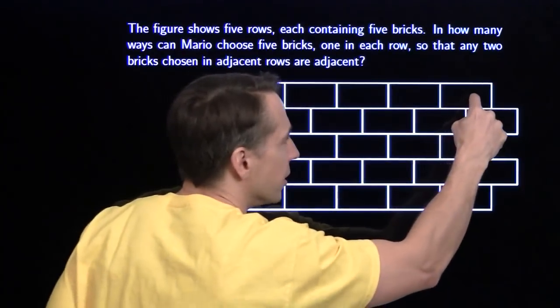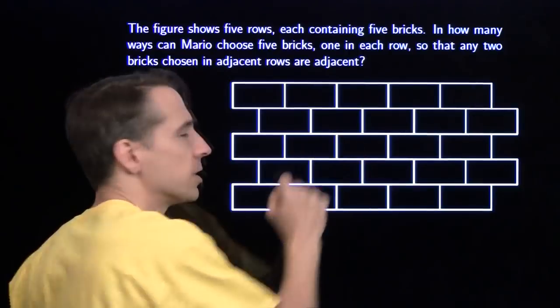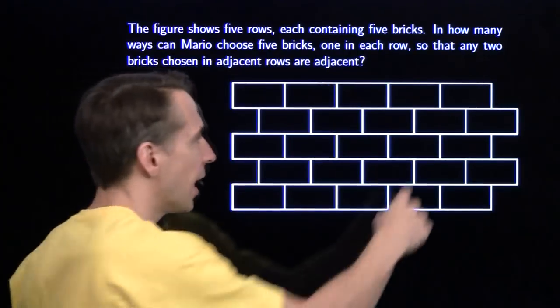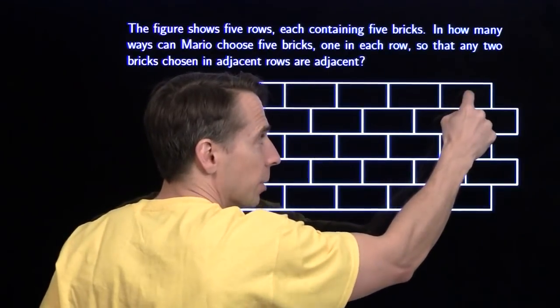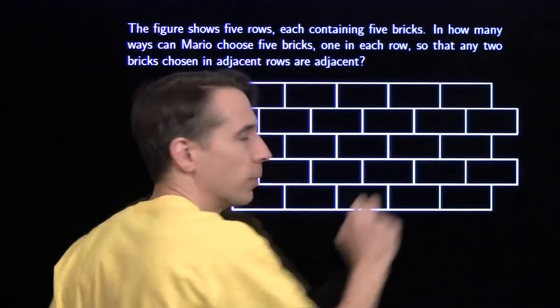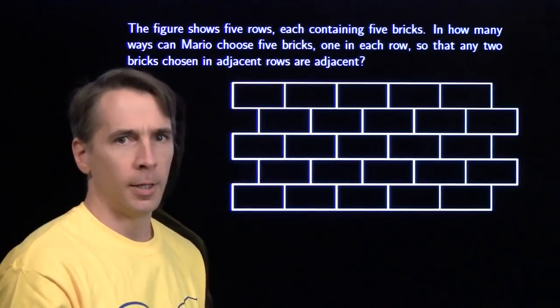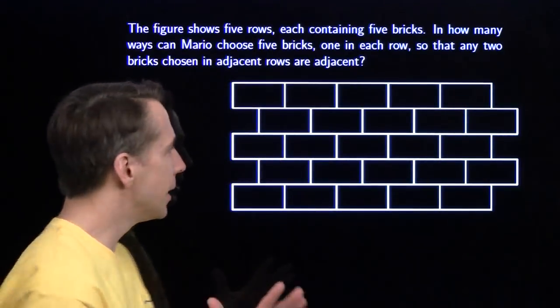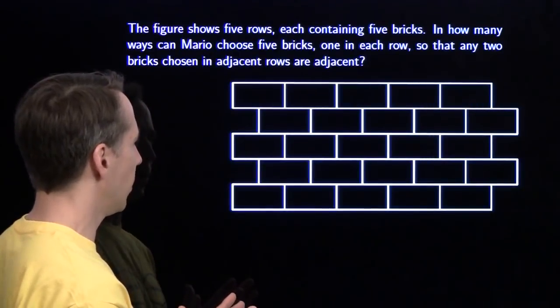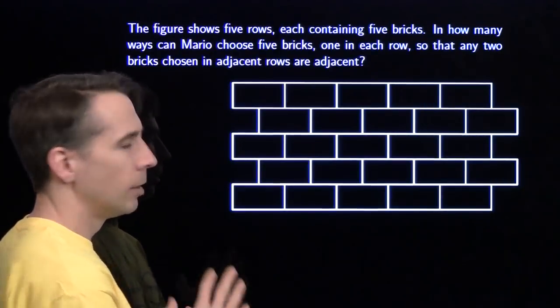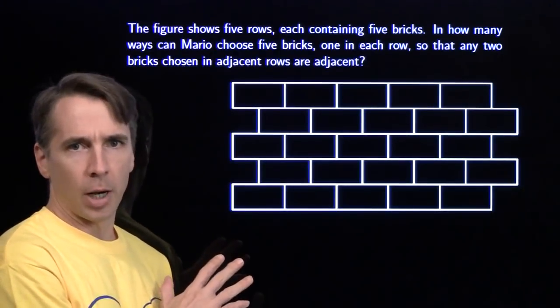So that any two bricks chosen in adjacent rows are adjacent. So he couldn't pick this brick and this brick, for example — if he's going to pick this brick, he's got to pick one of these two. All right, we've got the plan now. Oh wait, we don't have a plan. We've just got the problem.